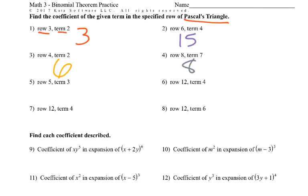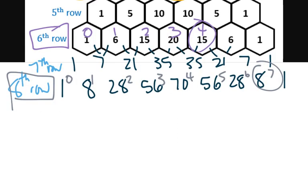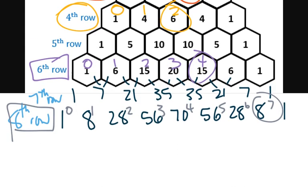Then row five, term three: row five, zero, one, two, three — so ten.